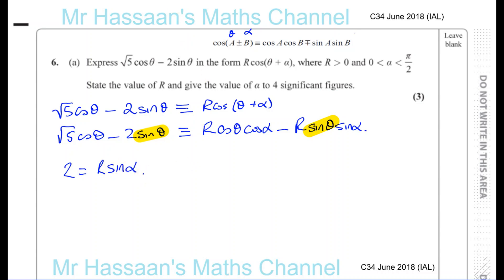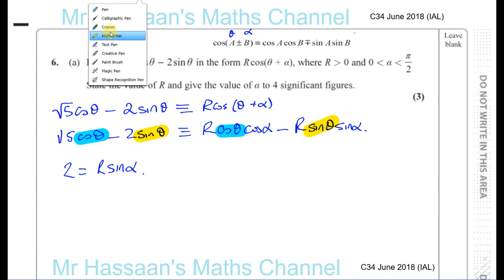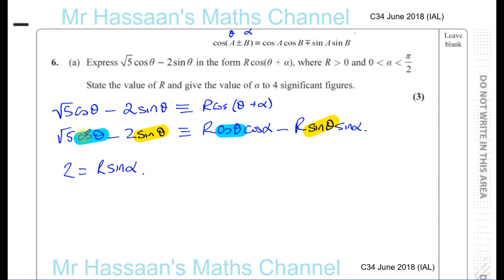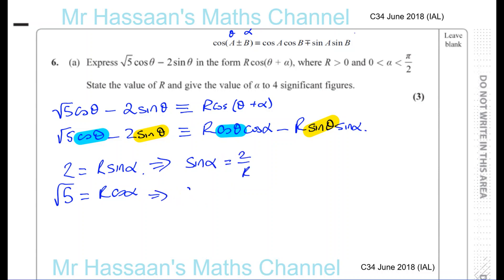And if we look at the cosine theta side, what's multiplying cosine theta on this side? It's root 5. So root 5 equals r times cosine alpha. What we can say here is: sine of alpha equals 2 over r, and cosine of alpha equals root 5 over r. There are different ways to proceed from here.